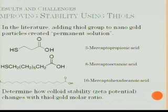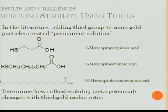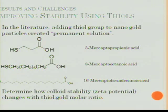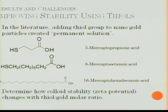So how are we going to fix this pressing problem? We are going to use thiol chemistry. Over the past 20 years, numerous scientists have taken gold nanoparticles, attached a variety of thiols to them, and found that a near-permanent solution is created. We are using a variety of different thiols, each with different carbon chains, to try to improve our stability. The thiol bond has an extremely strong affinity for gold. We are determining how our colloid stability and zeta potential change with the thiol-to-gold molar ratio — if we add more thiols, do we get a more stable solution? Do we need a one-to-one ratio? What do we need to get the most stable colloid possible?